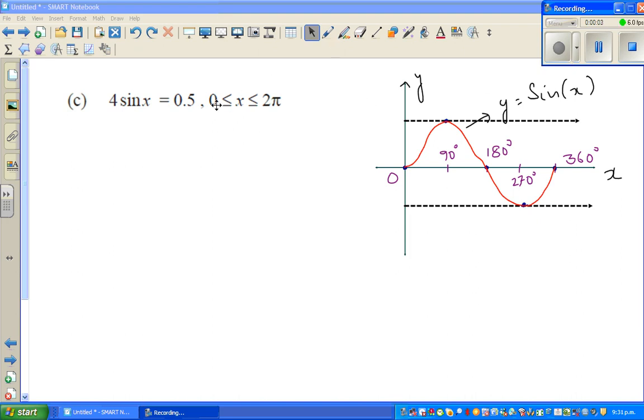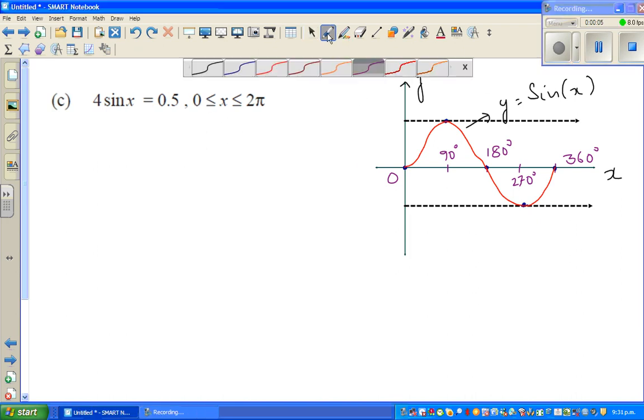Let us look at this question which is to solve a trig equation 4 sin x equals 0.5, and we want to find the answer in radians between 0 to 2π.